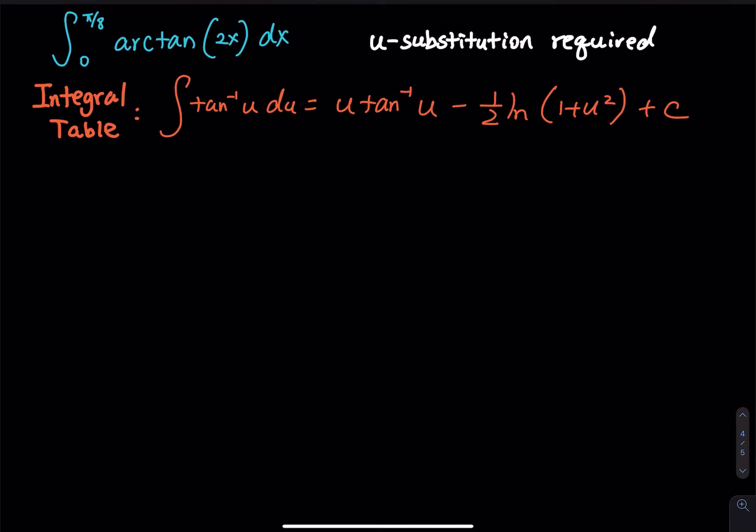Let's use the orange integral from the integration table to integrate the blue integral. First thing that I want to mention is arc tangent and inverse tangent, they are exactly the same. The second thing that I would like to mention is that from the integral table, there is a u. From the given problem, there is a 2x, so you have to perform a u substitution.